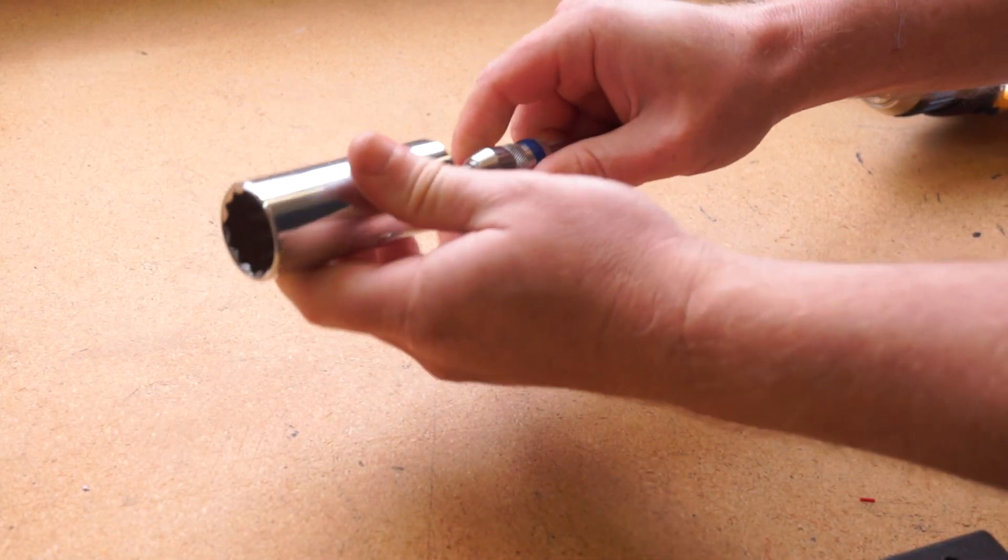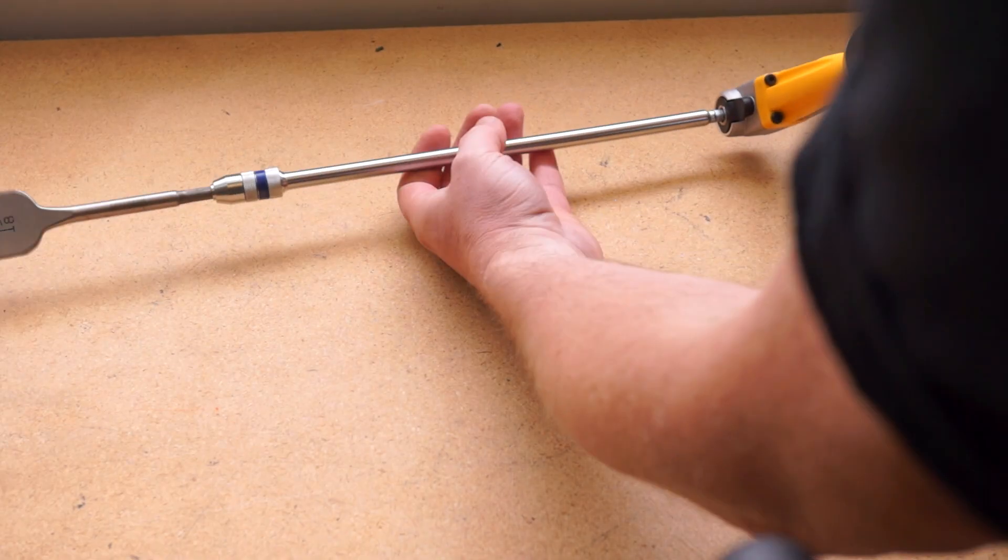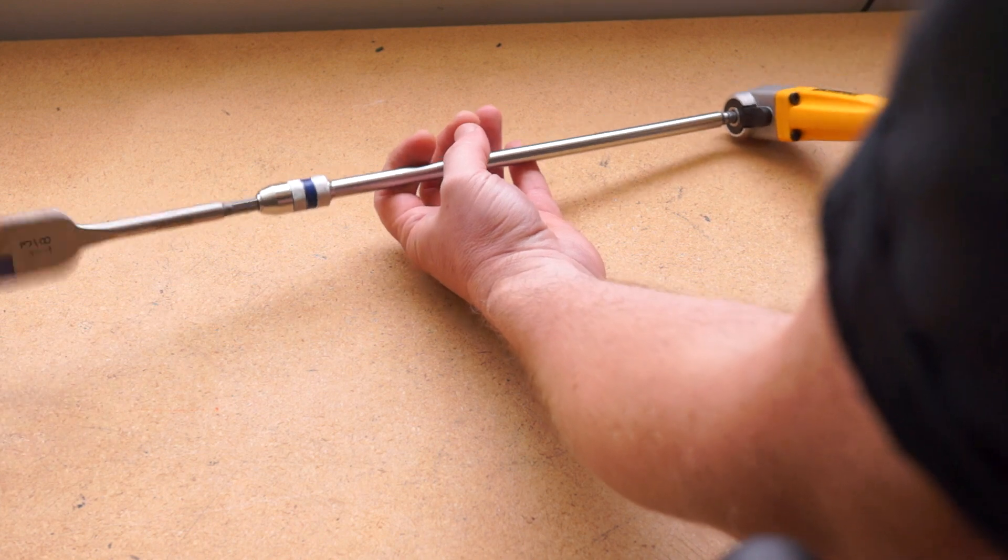You can drop in a socket bit and tighten up an out-of-reach nut or bolt. And for a real neat trick, you can combine this with a right angle adapter and drill hard-to-reach places inside walls.